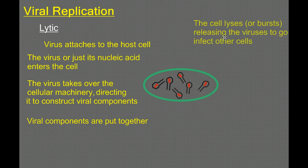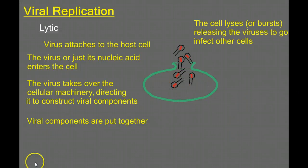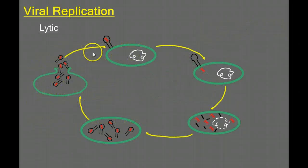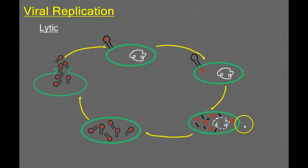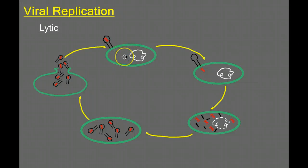Now let's think about why this makes us sick. A virus infects a cell, and instead of the cell doing its job, it's busy building viruses. Eventually the cell will lyse — to lyse means to burst — and the cell bursts and releases these viruses to go on and infect other cells. So the virus infects a cell, takes over the cell factory, demands it create more viruses, the components are created and assembled, and eventually the cell bursts, releasing viruses to infect new cells. This is the lytic viral replication cycle.